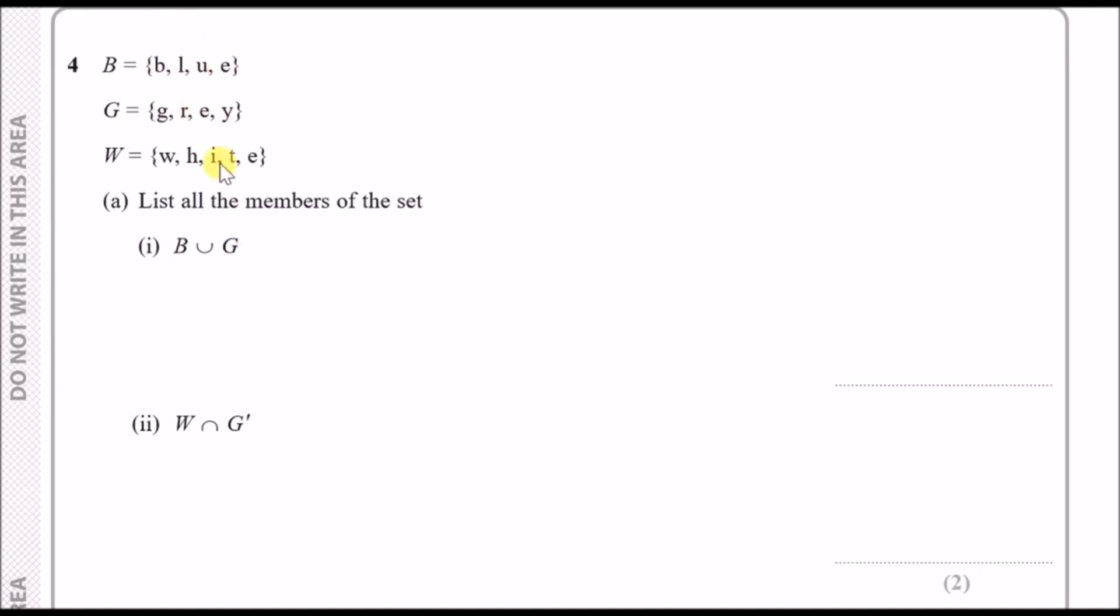So what they have in common. For the uniting thing we just write every single letter that appears in both B and G. If we look at both sets they literally have b, l, u, e and g, r, e, y. What you do however is you don't repeat the letters.